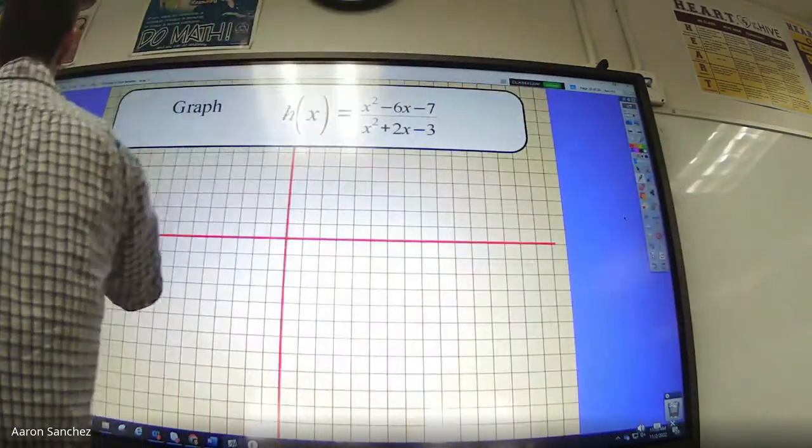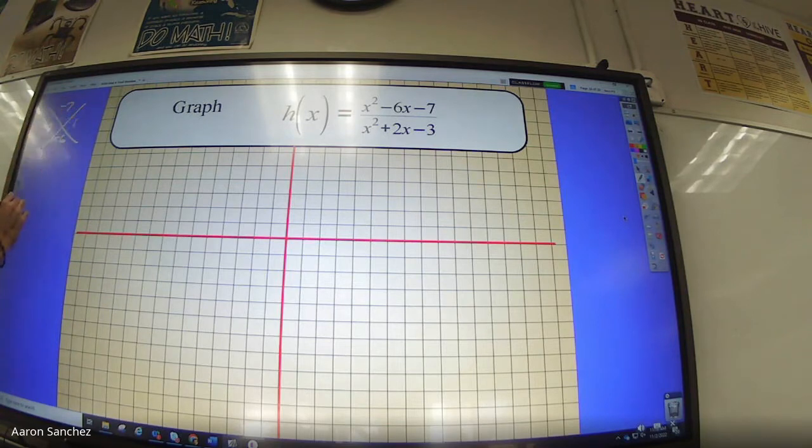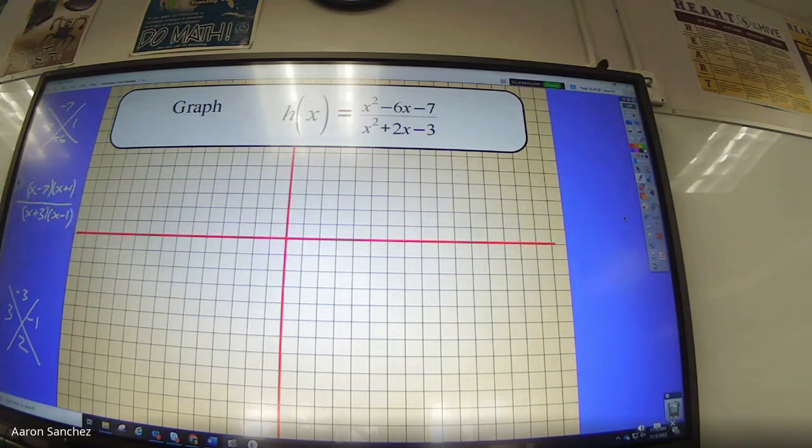I don't have a lot of room here, but on top I got negative 7, negative 6. So what times what equals negative 7 and adds to negative 6? Negative 7 and 1. The denominator is negative 3 and 2, so that's 3 and negative 1, right? So factored out, it's x minus 7 times x plus 1 all over x plus 3 times x minus 1, and we'll set that equal to zero.